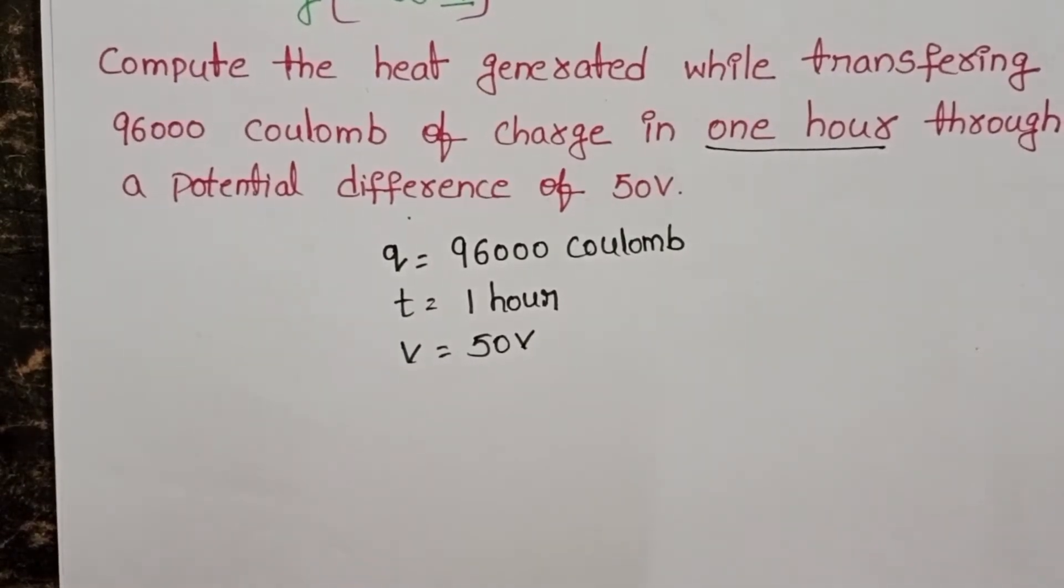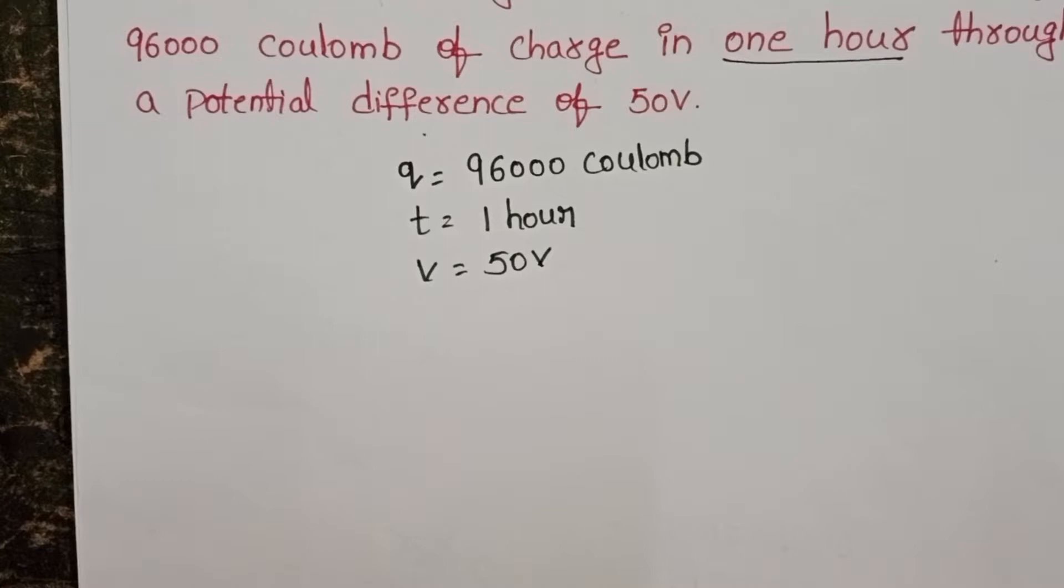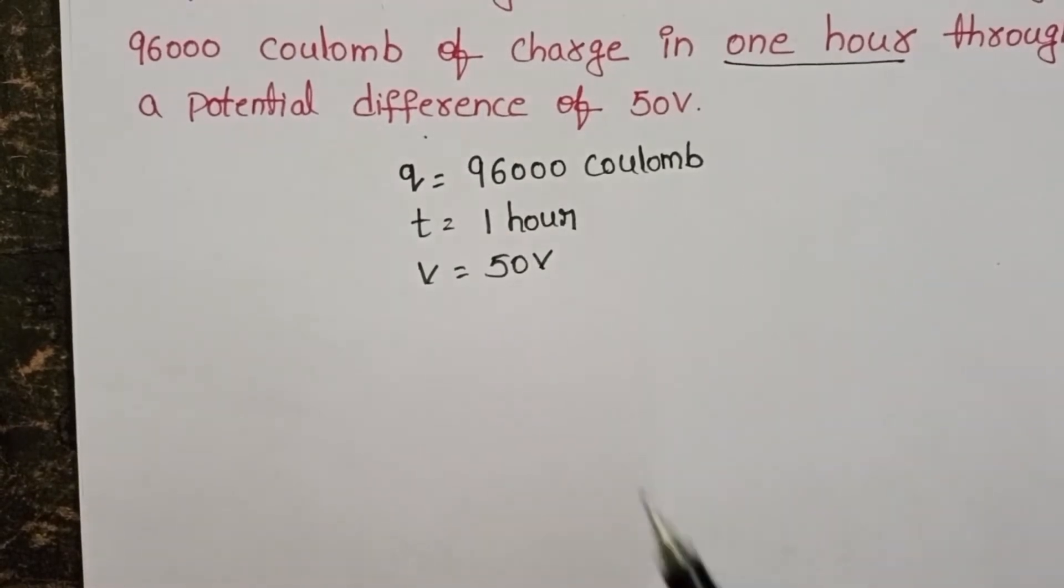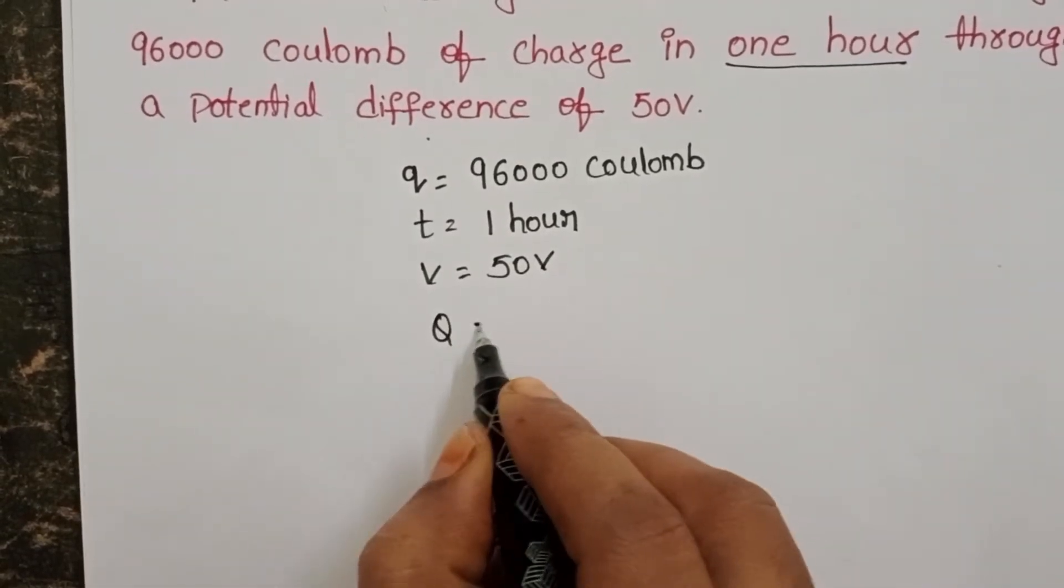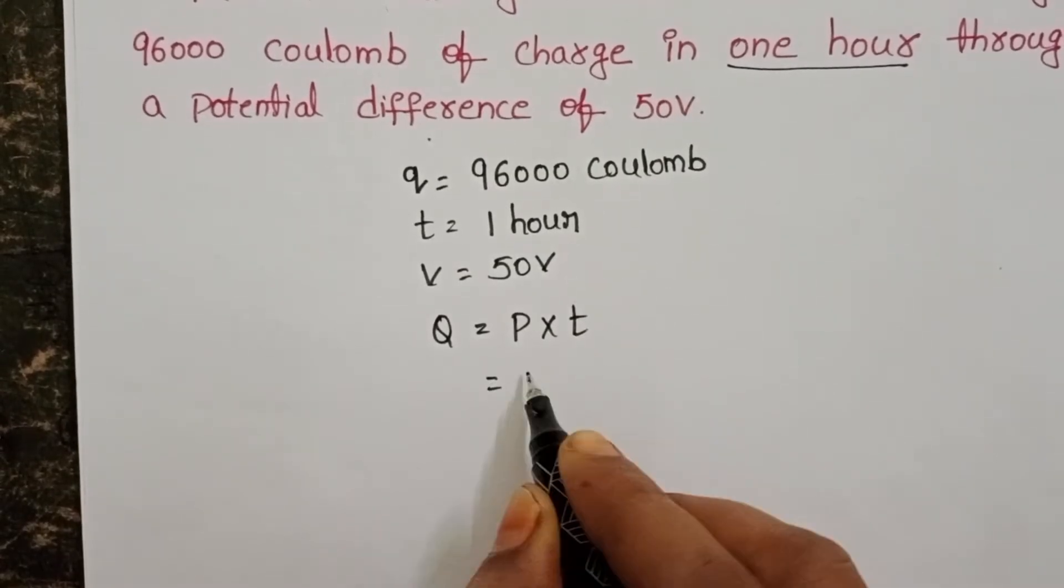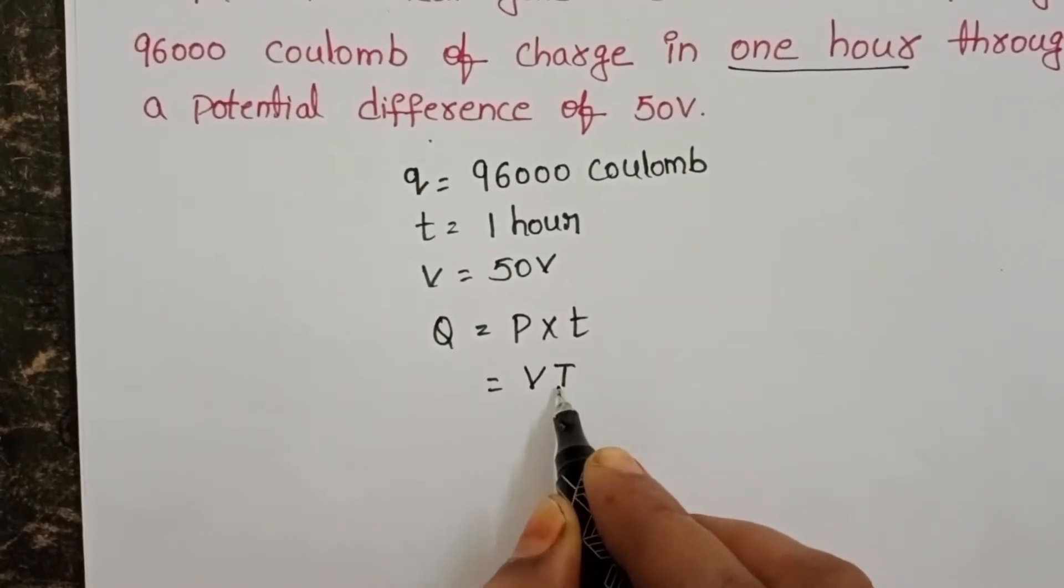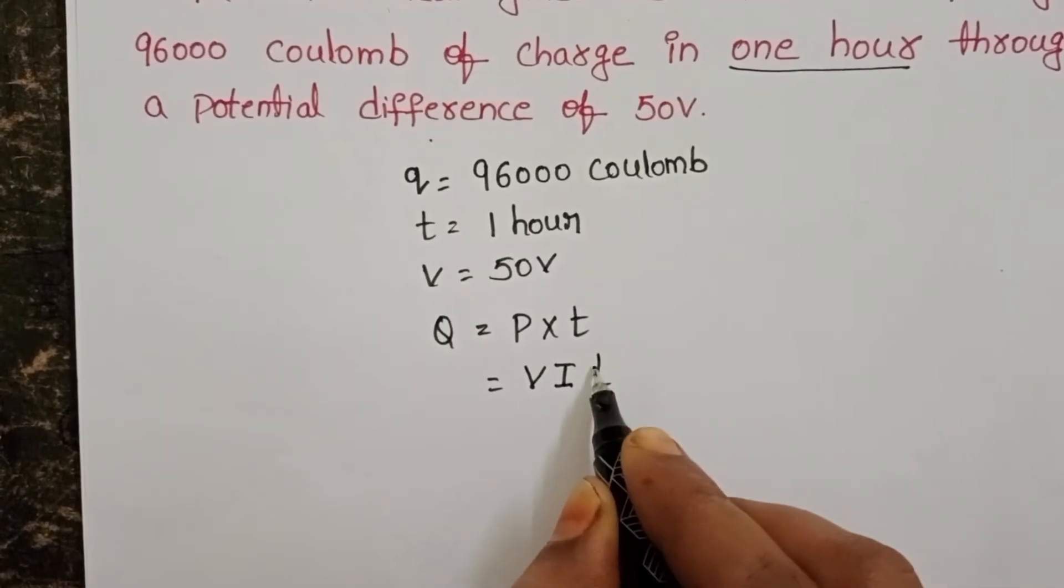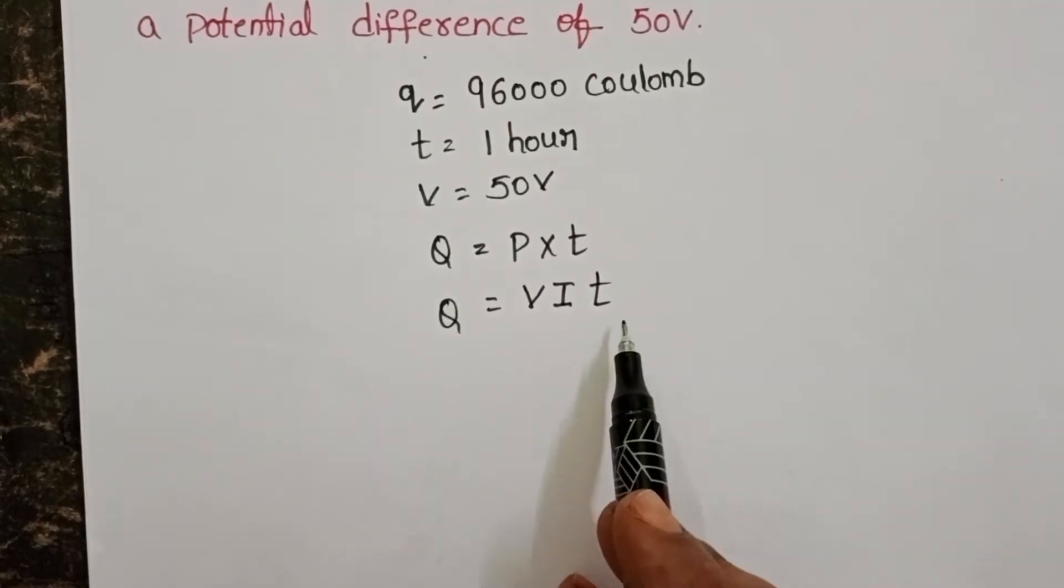By using this information, we have to find the heat generated in the circuit. Heat equals power times time, and power equals electric potential times electric current times time. Therefore, heat Q equals VIt.